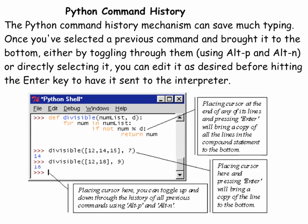Python can remember your command history. The command history mechanism can save much typing. Once you've selected a previous command and brought it to the bottom, either by toggling through them using alt P and alt N or by directly selecting it, you can edit it as desired before hitting the enter key and having it sent to the interpreter. Placing the cursor at the end of any line and pressing enter will bring a copy of all lines in the compound statement to the bottom. Placing the cursor at the prompt, you can toggle up and down through the history using alt P and alt N.